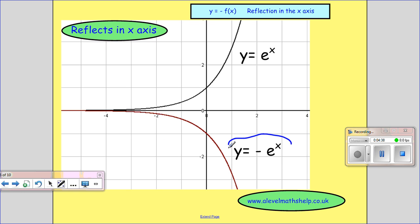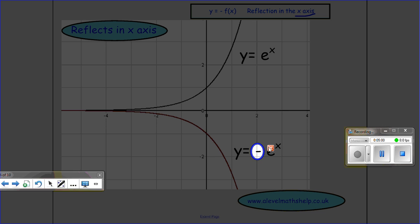OK, so this one, we've got y equals minus e to the x. And so this is happening outside the function. So our function's still exactly the same. And this gives a reflection in the x-axis up here. And that's because you just changed the sign. Whether we had minus before or plus before, we now have the opposite.